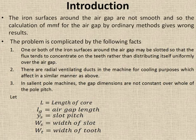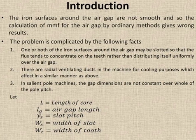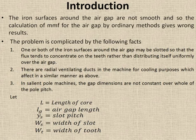The third fact is salient pole machines. You have studied about salient pole machines in synchronous generators. In a salient pole machine, the air gap dimensions are not constant over the whole pole pitch. Due to all these factors, the flux around the air gap is not uniformly distributed.